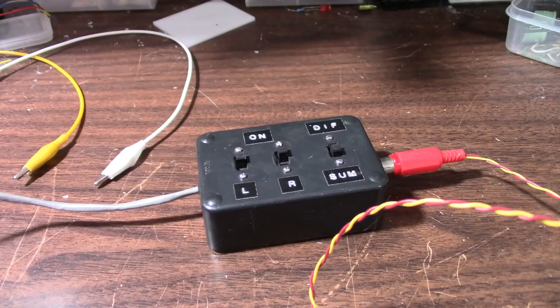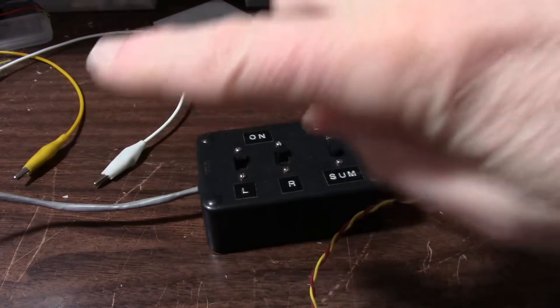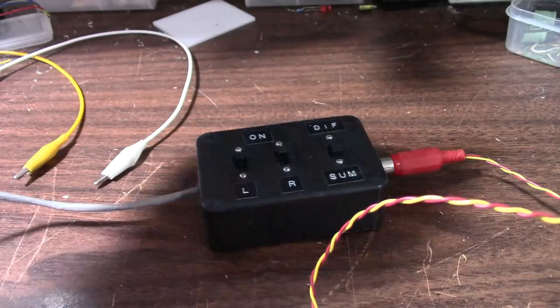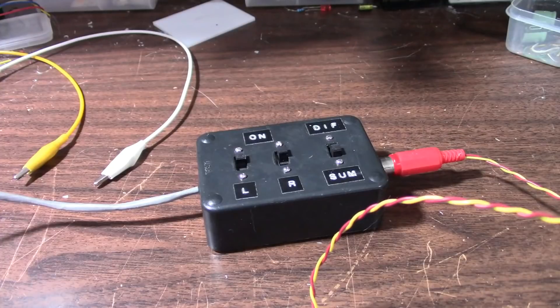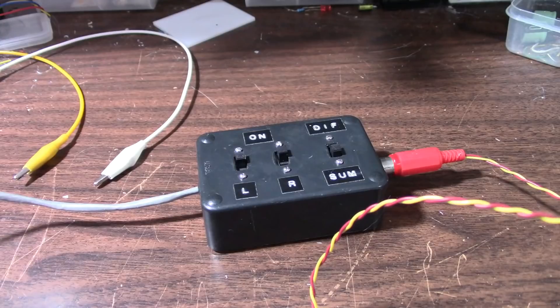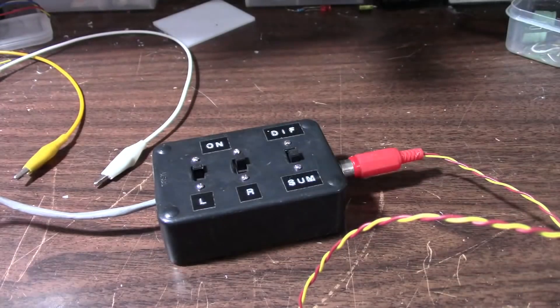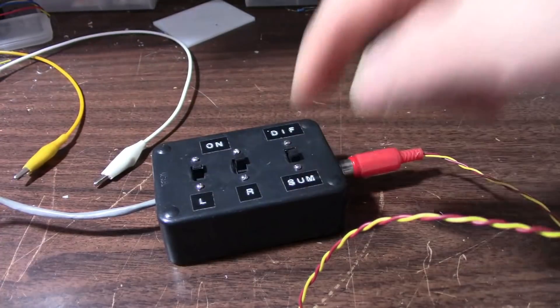So what I did is I made a test file, an indicated channel test file, and it has a left panned, right panned, front which is the center panned, and rear. Now the rear is just the left and right channels out of phase, and that's how they encoded the rear signal information in Dolby Surround. So what I'll do first is with this set for sum mode, I'll play that. You'll hear both the channels, the front, and the rear will be removed.